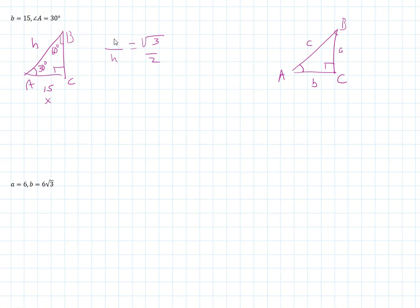We know that this x is 15 here, so we can just write it like that. The only thing we don't know is the hypotenuse, so we cross multiply. That's 30, and this way is the square root of 3 times h. Divide through by the square root of 3, you get 30 over the square root of 3 is h. Then we have to rationalize this, so we'll multiply the top and the bottom by root 3. You get 30 root 3 over 3, and that simplifies to 10 root 3.